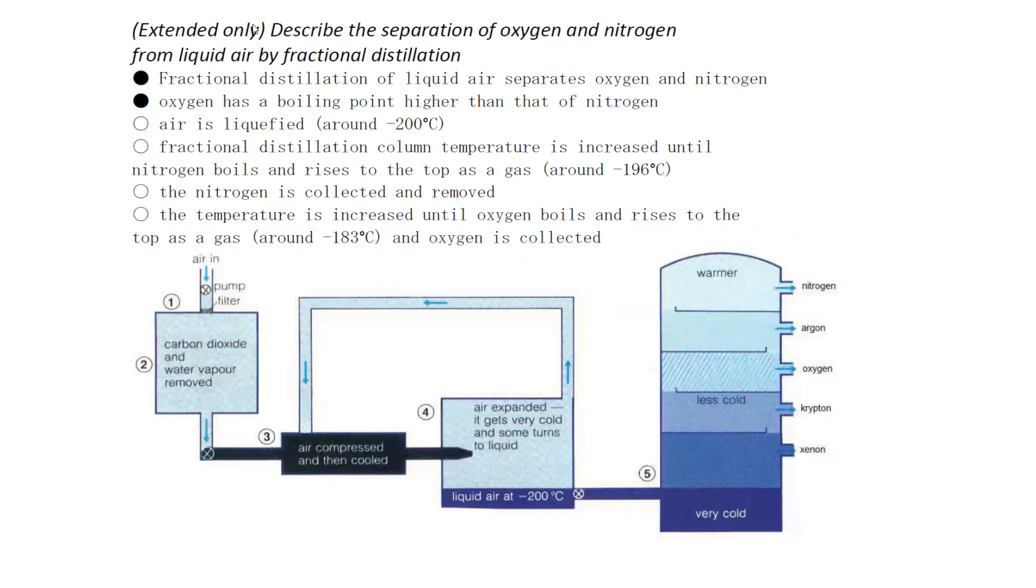This is a fractionating column, the whole apparatus is shown. The fractional distillation of liquid air separates oxygen and nitrogen. Oxygen boils at around -200°C. Oxygen's boiling point is higher than nitrogen. First, we pump the air into the chamber and then remove carbon dioxide and water.